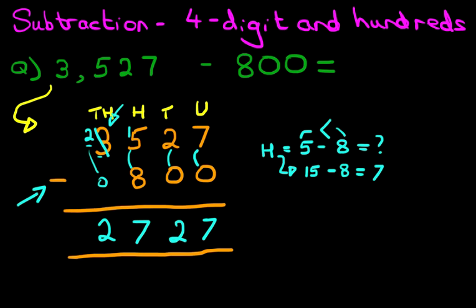And that is our answer. Three thousand five hundred and twenty-seven minus eight hundred is two thousand seven hundred and twenty-seven. That is correct. Let's give it a nice big tick. So that is how we do subtraction of four-digit numbers and hundreds using the vertical format.